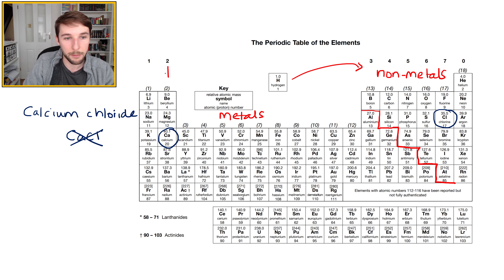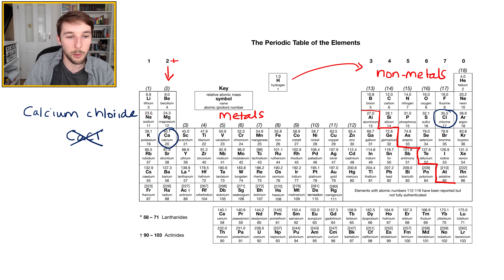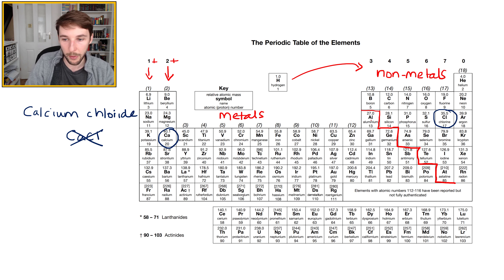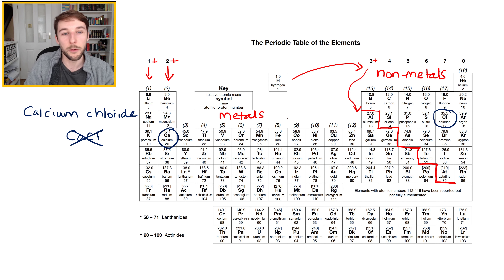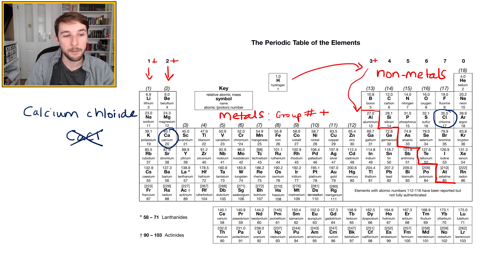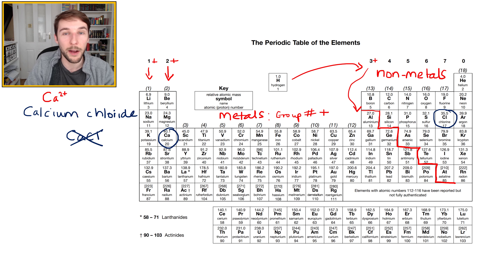For metals, the ion charge equals the group number plus. Calcium is in group 2, so it forms a 2+ ion. Sodium in group 1 forms a 1+ ion. Aluminium in group 3 forms a 3+ ion. So the rule is: group number, then a positive charge after it. Calcium's ion is written Ca2+.